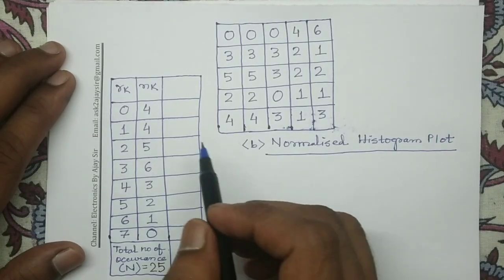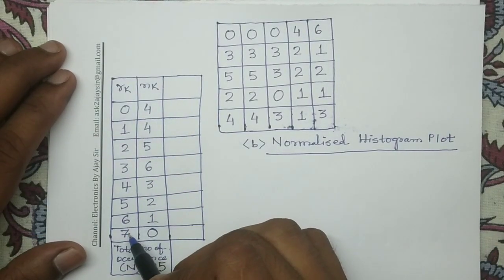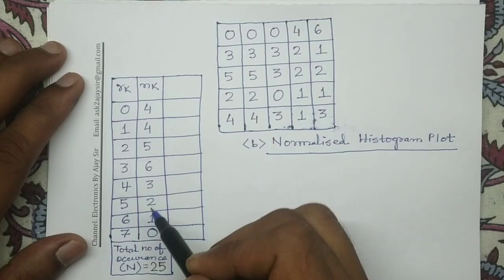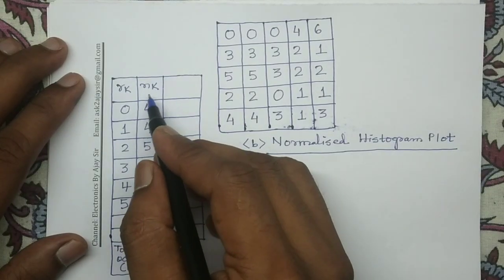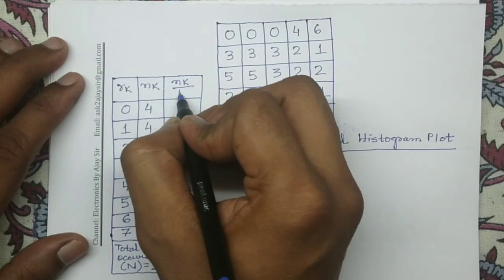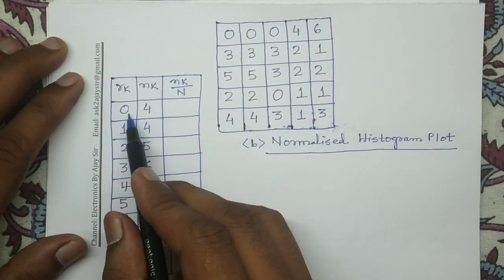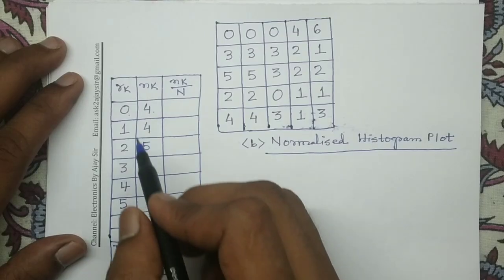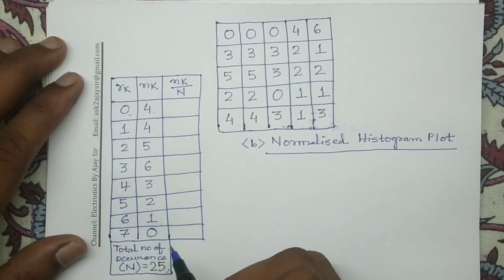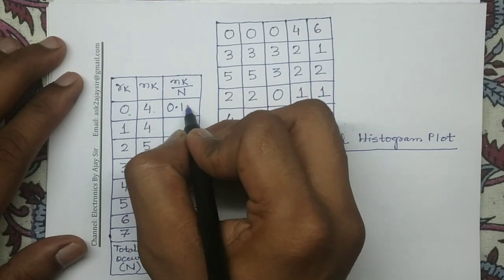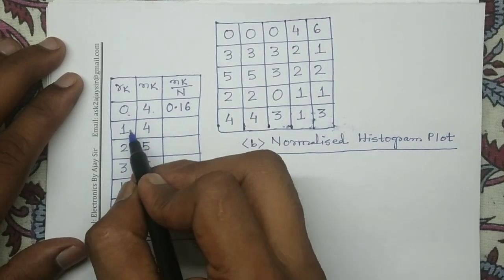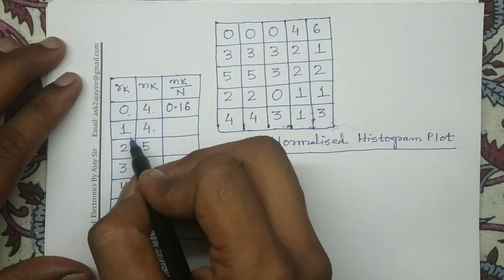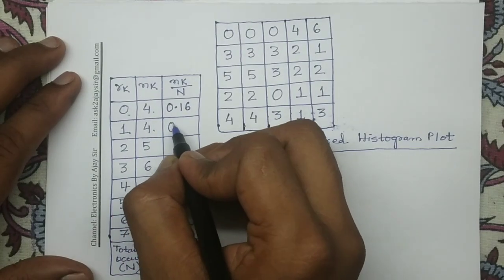Next we have to draw the normalized histogram plot. For the normalized histogram plot, we have to compute the probability of occurrence of each gray level. The probability of occurrence is represented by nK divided by n. For example, for gray level 0, its number of occurrence is 4, and the total number of occurrence is 25, so the probability of occurrence of gray level 0 is 4 divided by 25, which equals 0.16.